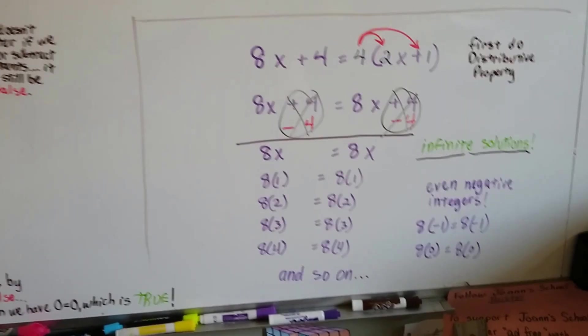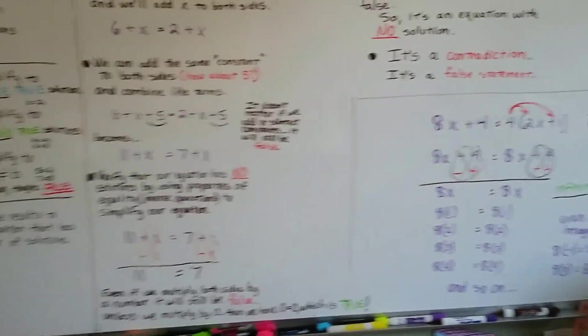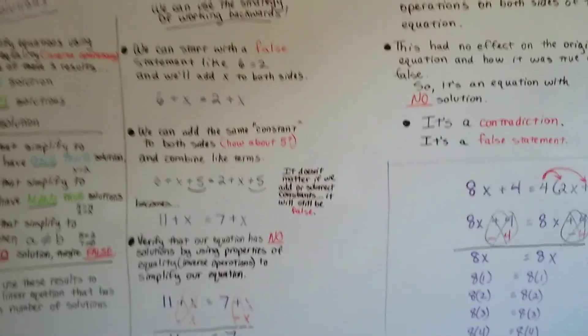That's the identity one. This is a contradiction one because there's no answer. That's the identity one because there's infinite solutions.